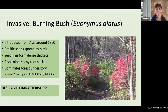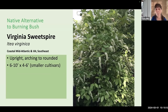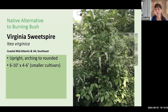Burning bush was introduced to the United States from Asia around 1860. It spreads prolifically by seeds dispersed by birds, and the seedlings form quite dense thickets, dominating a forest understory. It's now invasive from New England all the way to the Gulf Coast. If you're looking for a shrub with good fall color, I recommend Virginia Sweetspire, Itea virginica. This is an upright, arching to rounded plant, six to ten feet tall, with smaller cultivars including Henry's Garnet at five to six feet and Little Henry at two to three feet.